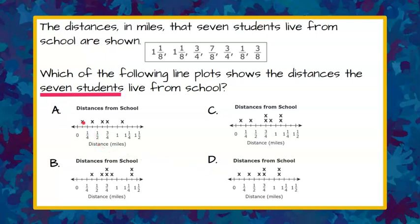Choice A. One, two, three, four, five. So choice A cannot be a possible answer because it only has five pieces of data and it needs to represent the data for seven students.